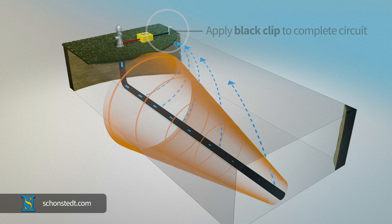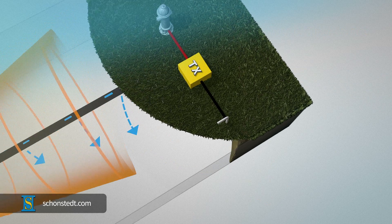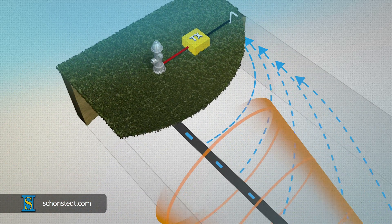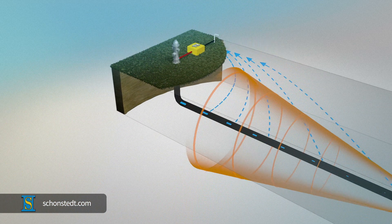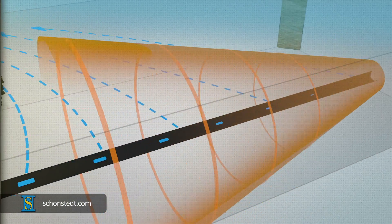It's important to complete the circuit by properly implementing a ground. In general, the better the ground, the better the signal. A current will now travel along the pipe or cable. As the signal travels, it gradually leaks into the ground and diminishes the farther it gets from the transmitter.